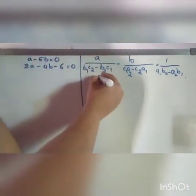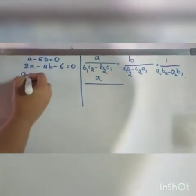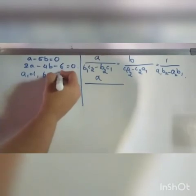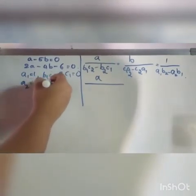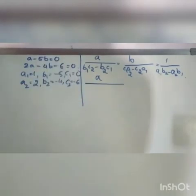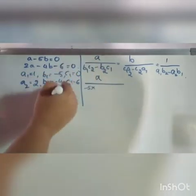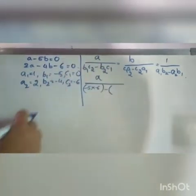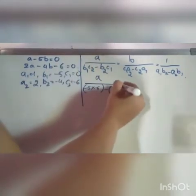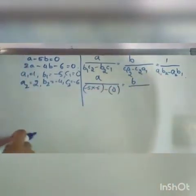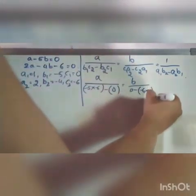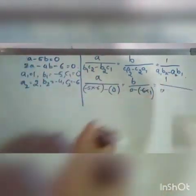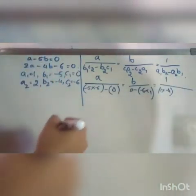Identifying coefficients from the two derived equations: a1 = 1, b1 = −5, c1 = 0; a2 = 2, b2 = −4, c2 = −6. Substituting: a divided by [(−5)(−6) − (−4)(0)] = a/(30 − 0) = a/30. And b divided by [(0)(2) − (−6)(1)] = b/(0 + 6) = b/6.